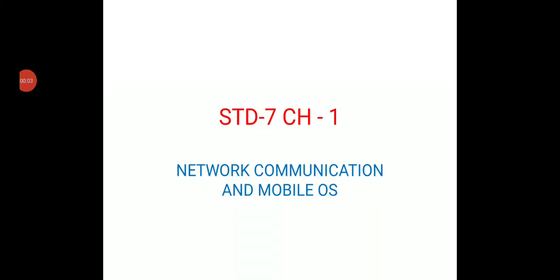Standard 7, Chapter 1: Network Communication and Mobile Operating System. Students, we are going to learn about networks in this chapter — how many types of networks are there, what are their different types, and one new topic is mobile operating system, which we are going to learn in this chapter.